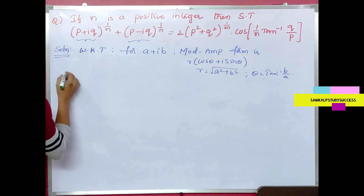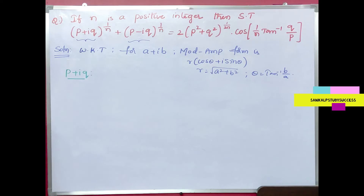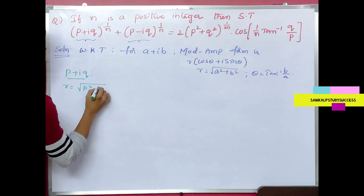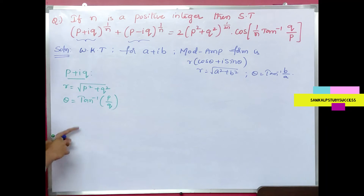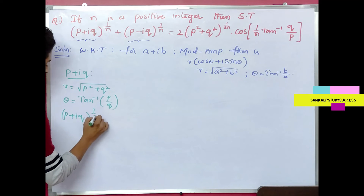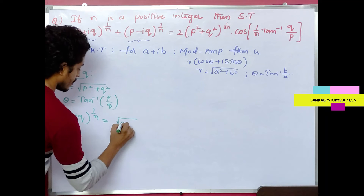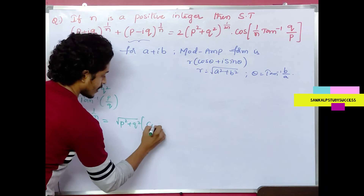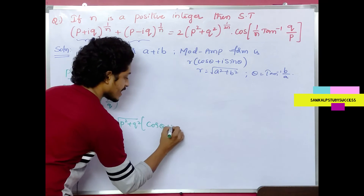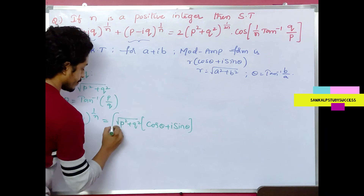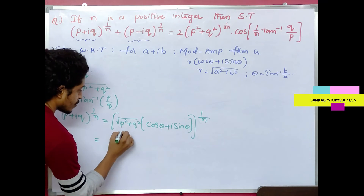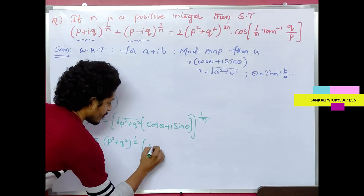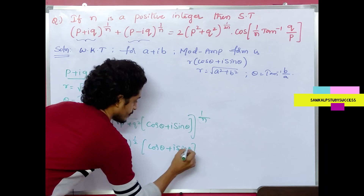So for p + iq: r = √(p² + q²) and θ = tan⁻¹(q/p). Therefore, (p + iq)^(1/n) = (√(p² + q²))^(1/n) · (cosθ + i sinθ)^(1/n) = (p² + q²)^(1/2n) · (cos(θ/n) + i sin(θ/n)).